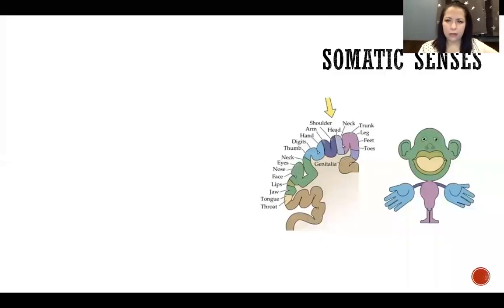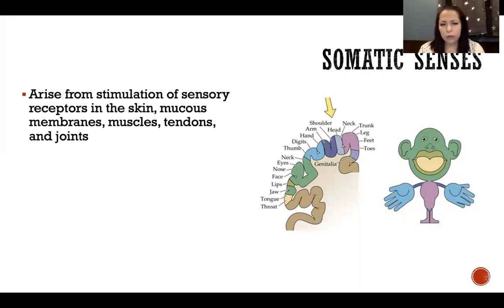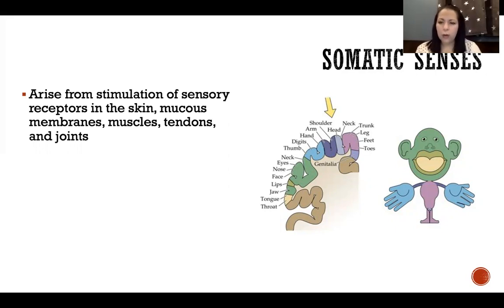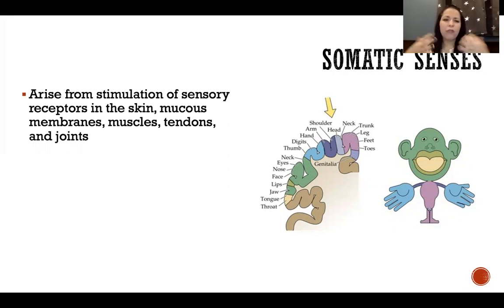In this video I'm going to talk about somatic senses. Somatic senses arise from stimulation of sensory receptors in the skin, mucous membranes, muscles, tendons, and joints. The word soma means body, so anything somatic we're talking about of the flesh, of the body, compared to something visceral which would be of the internal organs.